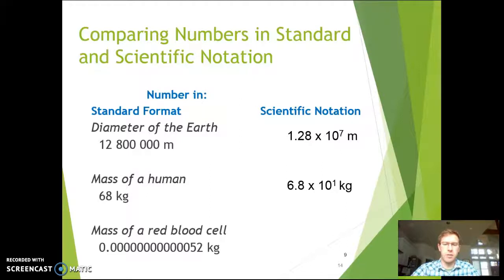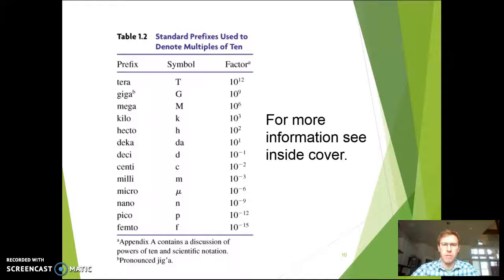And then lastly, that mass of the red blood cell from earlier, if you did this one, give it a go. I want you to do this one, so give it a go. Try it out. So if you did this one accurately, you know you're moving to the right, so you're going to have a negative power. I got 5.2 times 10 to the negative 13th power kilograms. So there's some good examples for you.